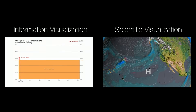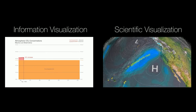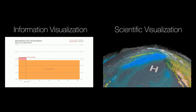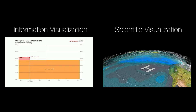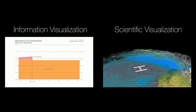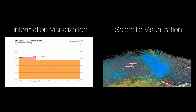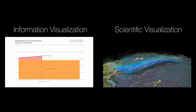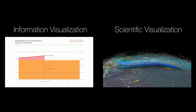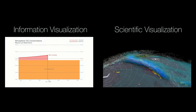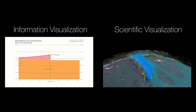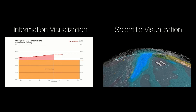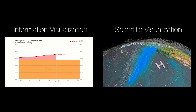Before I go too deep into the Houdini stuff, I want to define what I mean by scientific visualization. A lot of people hear the term data visualization, and I would say that probably 95% of what you encounter is what we actually refer to as information visualization — 2D charts and graphs about relational data that doesn't have an inherent geometric property. When I talk about scientific visualization, I'm talking specifically about making scientifically accurate imagery of 3D data that has an inherent spatial quality to it.